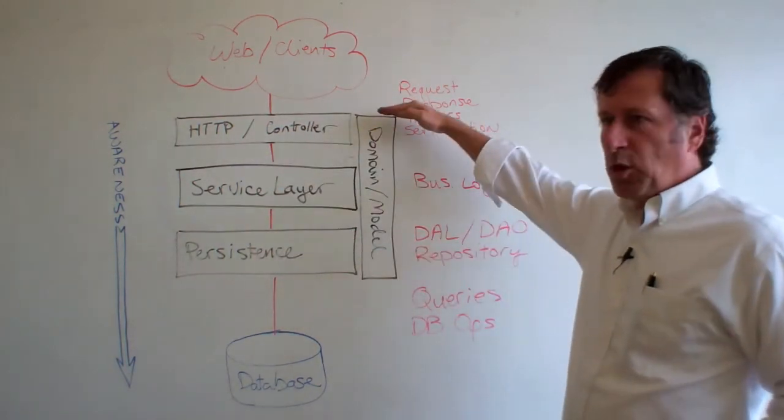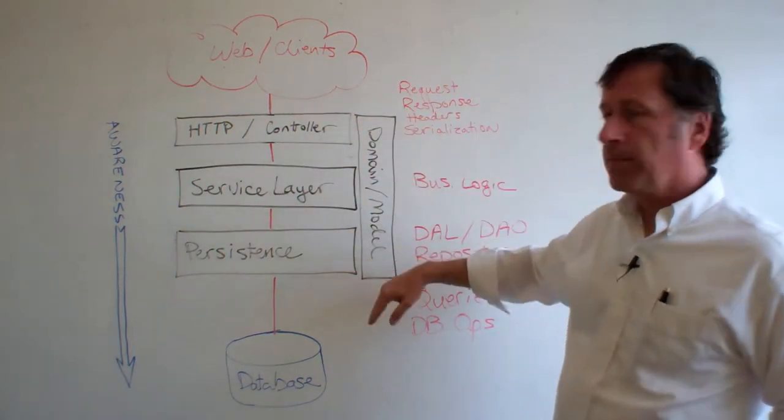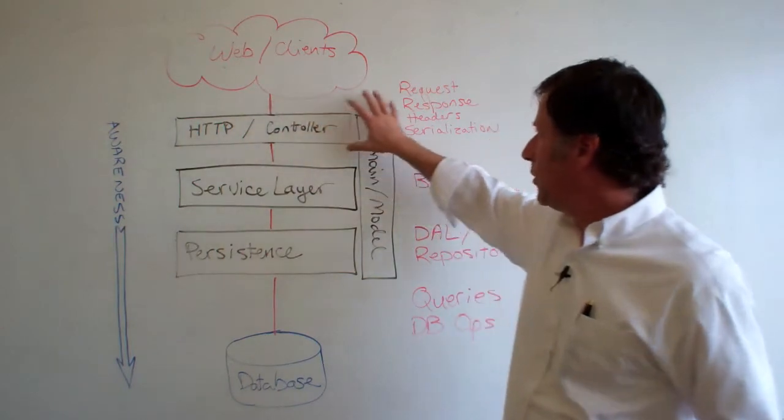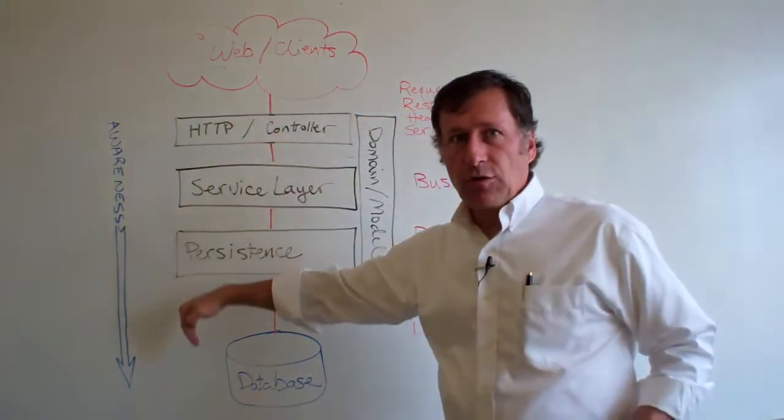So the method of communication is this model or this domain model off to the side. Okay, so communication happens via the model and awareness goes down.